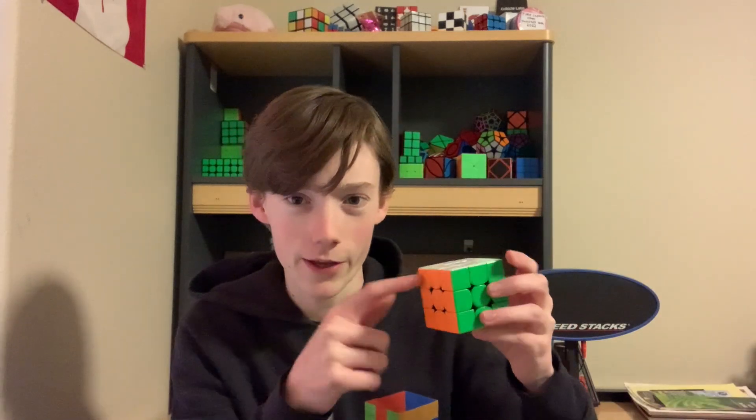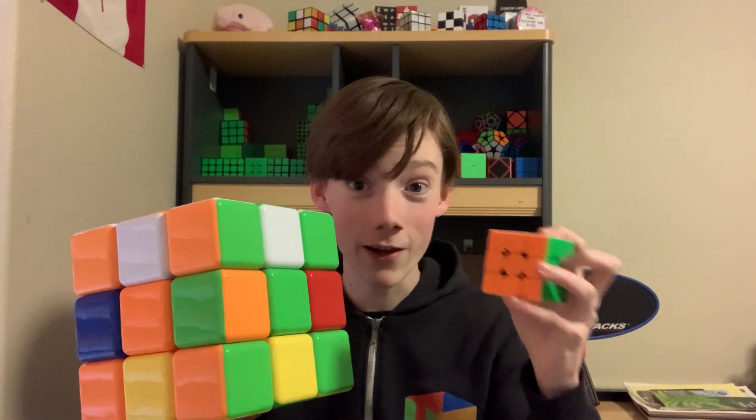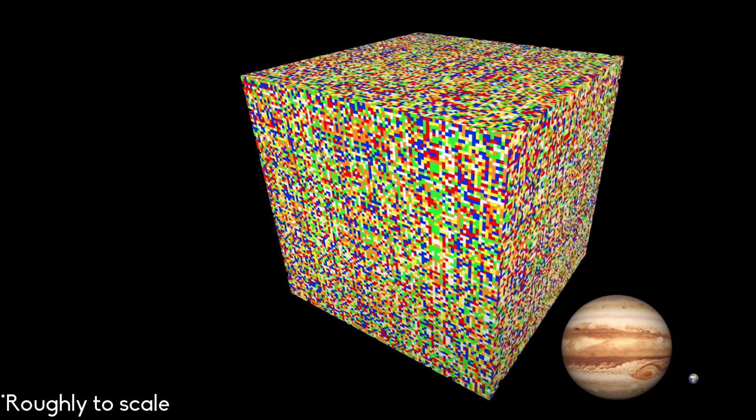Do you know how big that is? So the biggest planet in our solar system, the planet Jupiter, has a diameter — so like a length from side to side — of 86,881 miles. So let's say this is the planet Jupiter. A cube of all possible Rubik's cube scrambles is 2.23 times bigger than the biggest planet in our solar system. It's a massive cube, two times bigger than the biggest planet in our solar system.